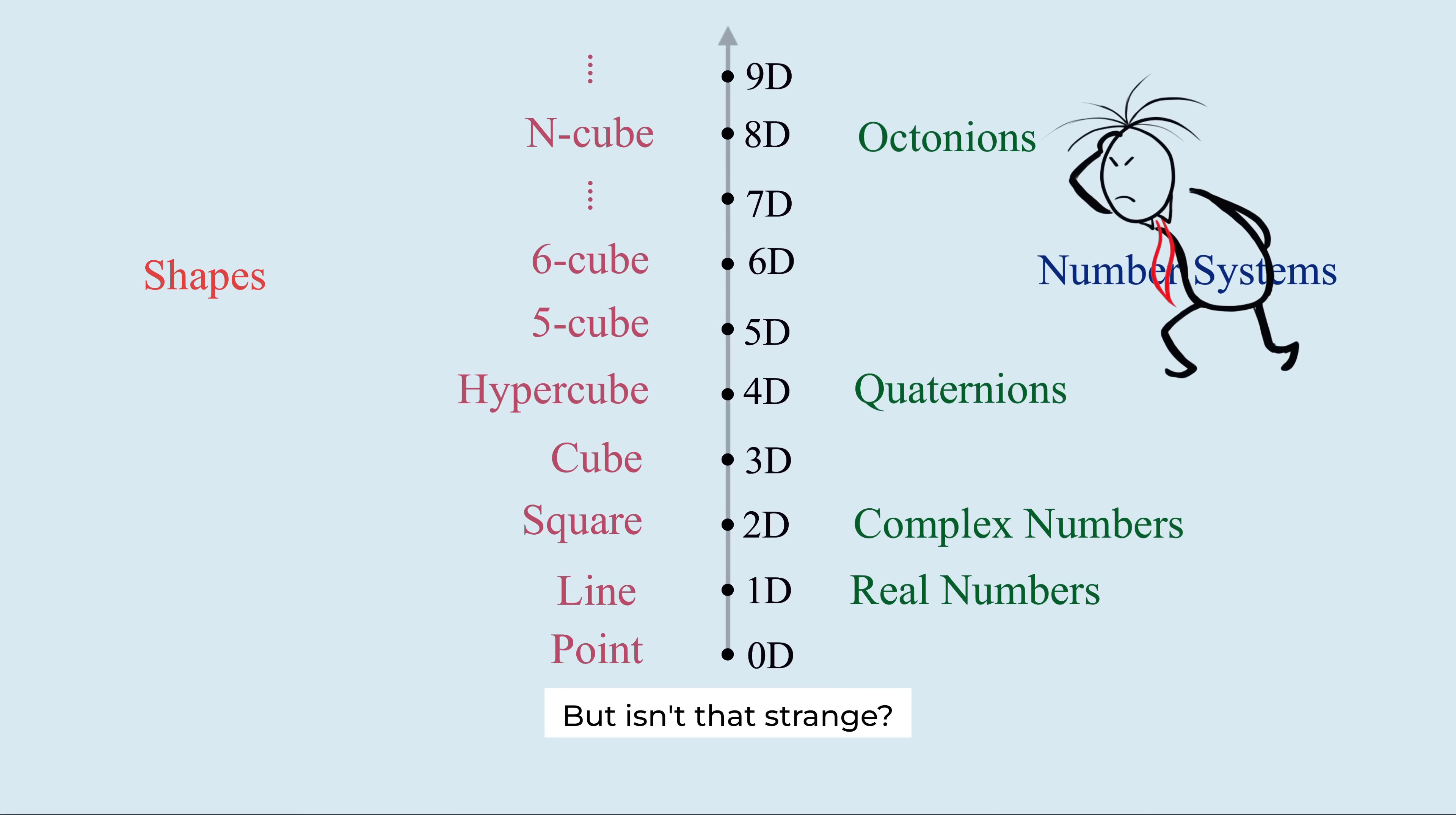But isn't that strange? Shapes exist in every dimension. So, why do numbers exist only in dimensions 1, 2, 4, and 8? Why not in 3, 5, or 9?